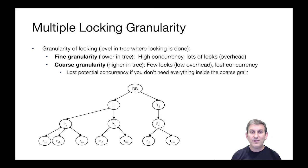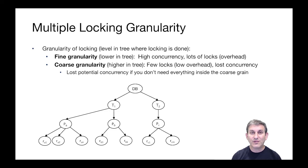Now we can have the granularity that we might want at any given time. Fine granularity lower in the tree gives you higher concurrency, but more locks — so you only want to use this when you're locking a few things down at the bottom of the tree. Coarse granularity is when you lock things higher up in the tree, so you set fewer locks with lower overhead in the lock manager, but you're preventing concurrency below that granularity. And so we can fit this trade-off according to the access patterns of our transactions.